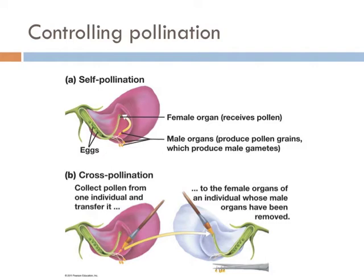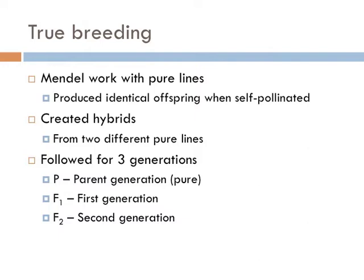One of the reasons Mendel chose the pea is that it can self-pollinate. The reason this is important is that when you self-pollinate a plant, you get a pure line. That means that if you have a plant with white flowers, it will always produce offspring with white flowers when mated with another pure-lined plant with white flowers. This is important because it controls the variation of traits. From those pure lines, Mendel created hybrids from the two different lines. For example, he would mate a pure line of white-flowered plants with a pure line of purple-flowered plants, and then he followed it for three generations. The pure line generation is known as the parent generation, the first hybrid generation is known as the F1 generation, and the second generation is known as the F2 generation.